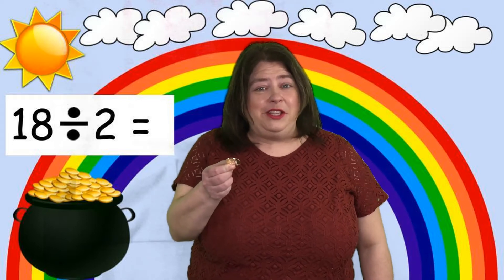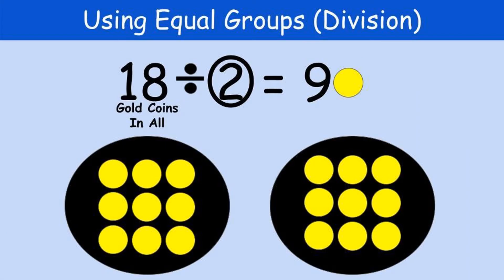But we could do that together, right? Our first problem is 18 divided by 2. The 18 represents how many gold coins there are in all — you'll notice there are 18 yellow circles or 18 gold coins. The second number is 2. I drew a circle around it to represent how many groups I have. I drew two circles to represent the pots of gold, and I passed out the gold coins into each pot equally. There are 9 coins in each pot of gold. So our final division equation reads 18 divided by 2 equals 9.